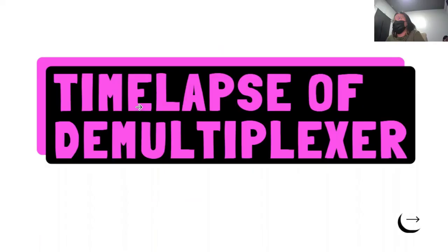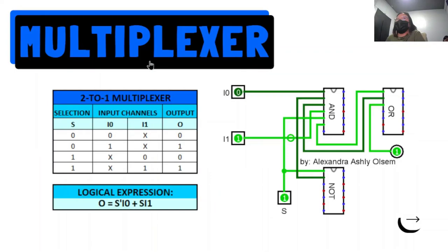And next we have a 2 to 1 multiplexer. This one consists of two data input lines, one select line and a single output line. Here is the circuit next to it and also the logical expression below. O equals to S bar I0 plus S I1.